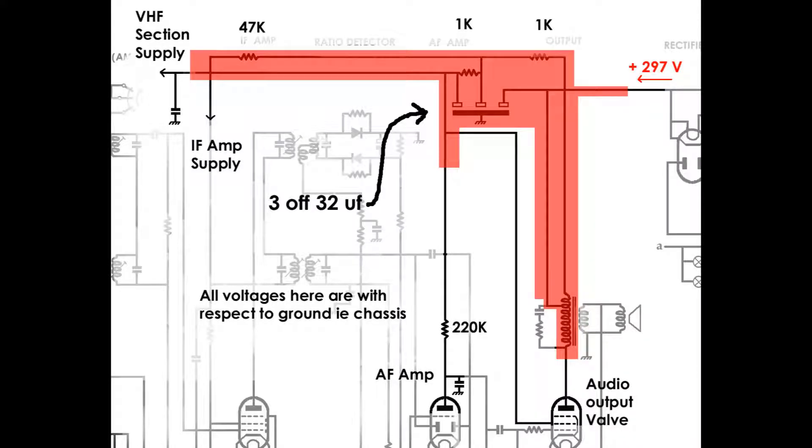We're now zoomed in to the selected portion of the circuit. The HTDC comes in from the rectifier valve on the right and that voltage has the mains frequency ripple on it, so it's full wave rectified. We have a positive 297 volts coming in and that voltage is applied to one of the three capacitors that's mounted in that can that I showed you. Each of the three capacitors are 32 microfarads and that 297 volts comes in to the right hand side of that capacitor group.